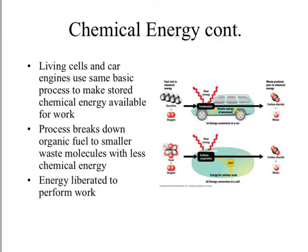Living cells and car engines have something in common — they basically use the same process to make stored chemical energy available for work. Both cells and cars have to break down the organic fuel: cells break down carbohydrates and fats, and cars break down gasoline, in order to release energy. When we break bonds, energy is released — that's chemical energy. In a car, heat breaks the bonds inside the combustion engine, producing the kinetic energy of the movement of the wheels.